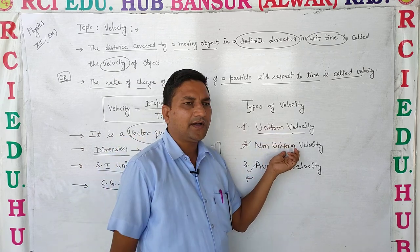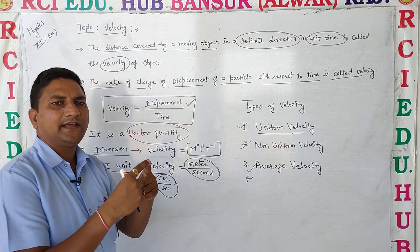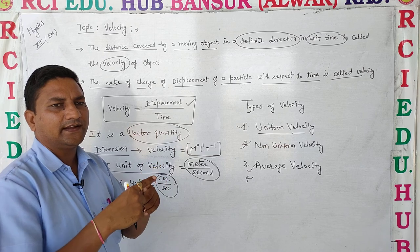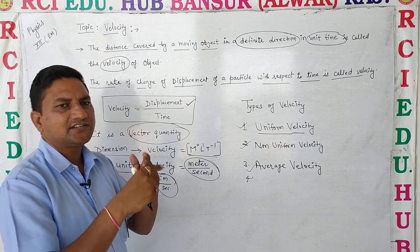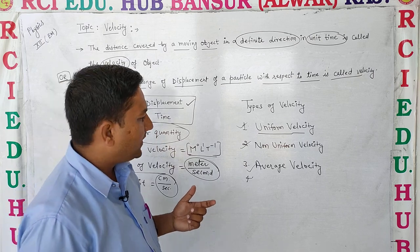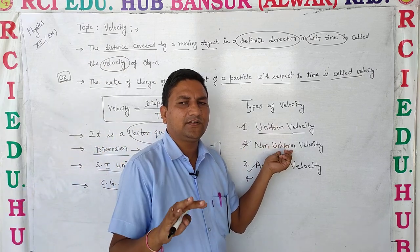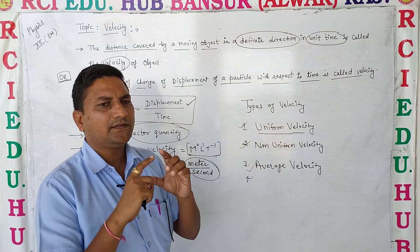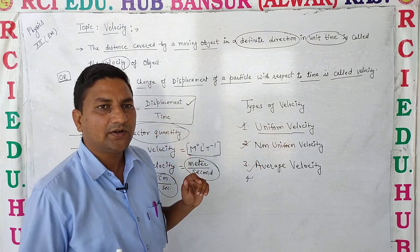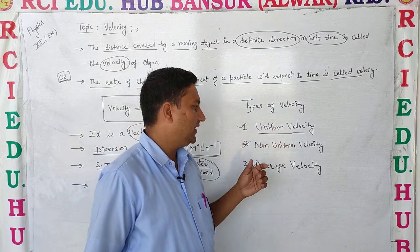Non-uniform velocity: if a moving object traveling in a particular direction generates different displacements in equal time intervals, then the velocity is non-uniform — meaning the speed generated is also not uniform.